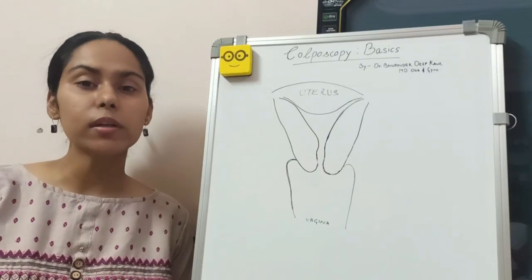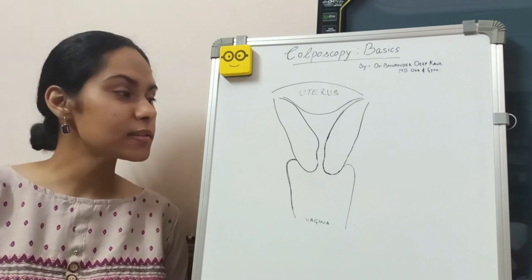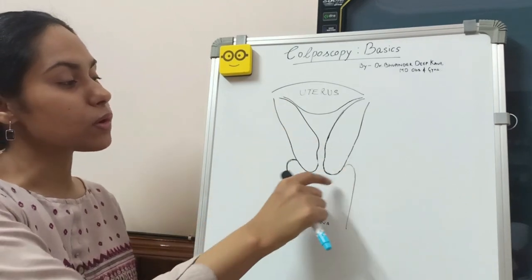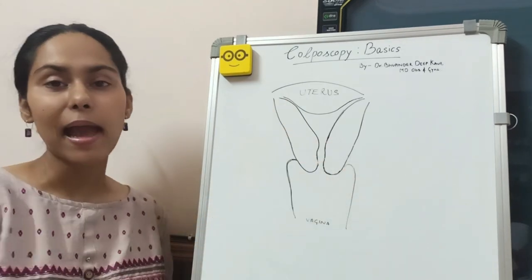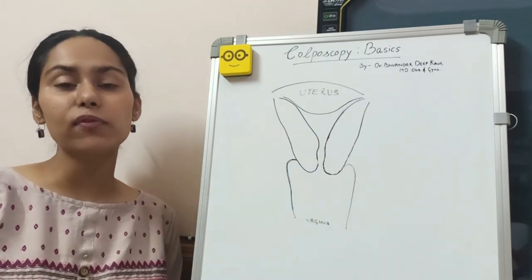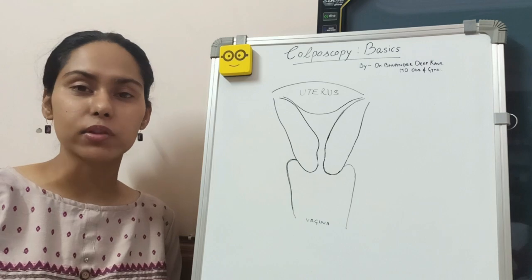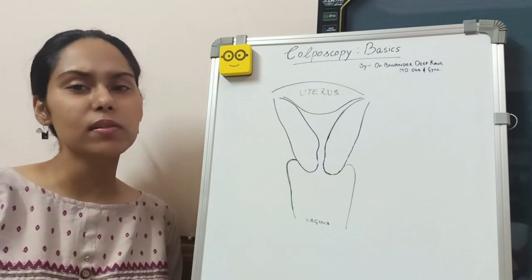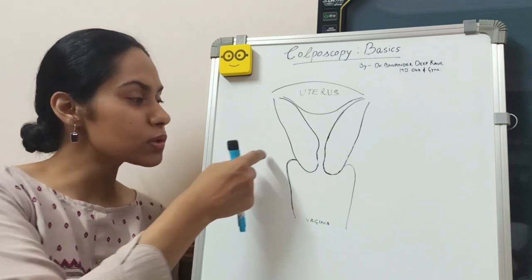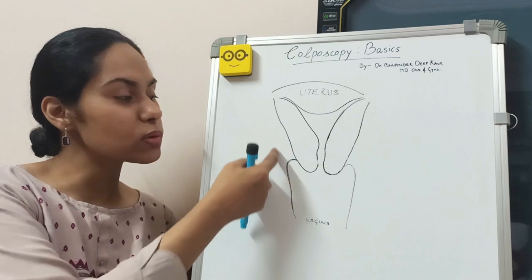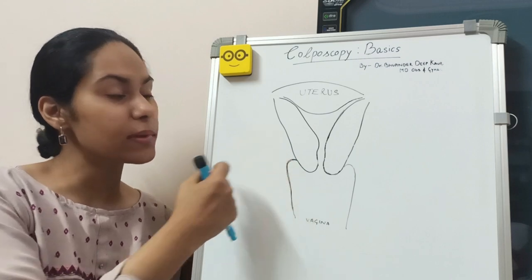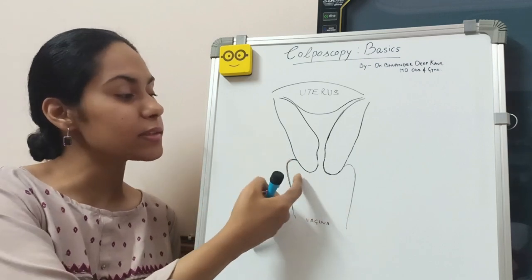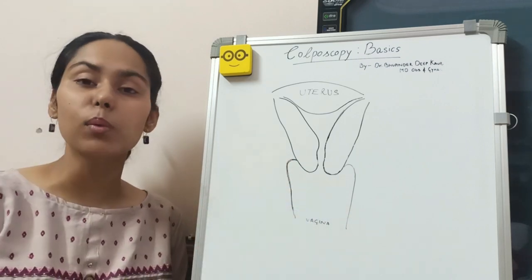Firstly, talking about the cervical structure. The cervix is the lowermost portion of the uterus and it is made up of fibromuscular tissue. It is almost conical or cylindrical in shape, measuring approximately 3 to 4 cm in length and 2.5 cm in width.